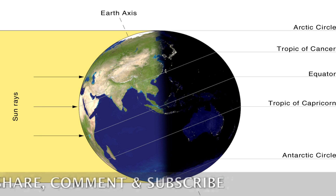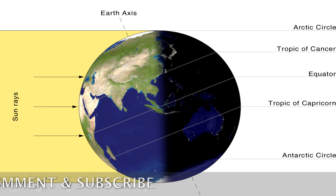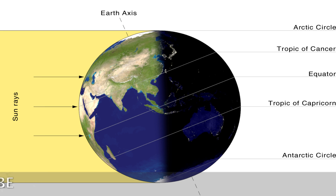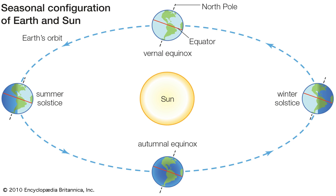Now let's talk about the summer solstice — the first day of summer and everything you should know about the longest day of the year. In 2021, the June solstice occurred on Sunday, June 20, marking the start of summer in the northern hemisphere. Here is everything you should know about the summer solstice: what it means, why it's the longest day of the year, and how to celebrate it.